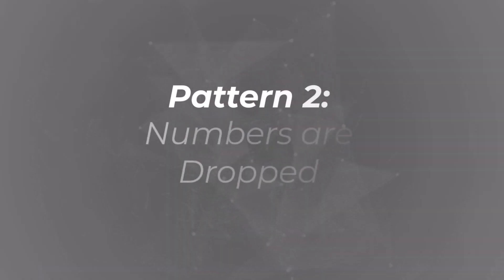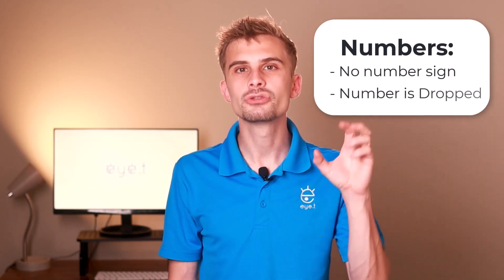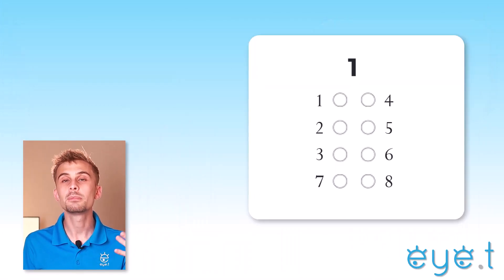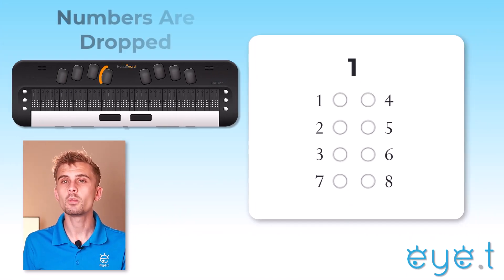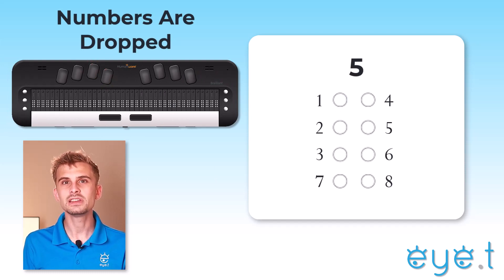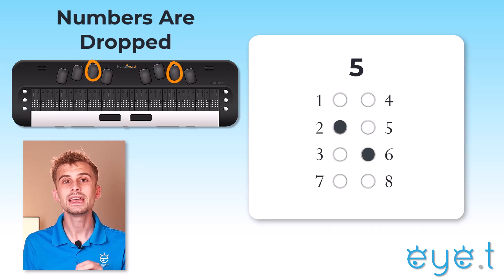Pattern 2: numbers are dropped. In computer braille, any time you'd like to write a number, you're going to forget the number sign, and just like in Nemeth code, that number will be dropped down to the lower half of the cell. For example, the number 1 in UEB is usually dot 1, but in computer braille it is dot 2. The number 5 in UEB is dots 1 and 5, but in computer braille we're going to drop it down to dots 2 and 6.